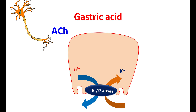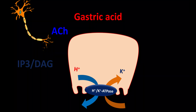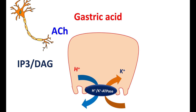Acetylcholine acts on muscarinic receptors expressed on gastric parietal cells, resulting in activation of the IP3 and diacylglycerol system. This increases intracellular calcium levels, leading to depolarization of the gastric parietal cells, which stimulates the proton pump — the H+/K+ ATPase pump. When activated, this pump secretes protons in exchange for potassium; chloride ions are passively secreted into the lumen where they form HCl as gastric acid.